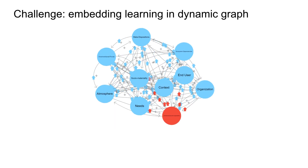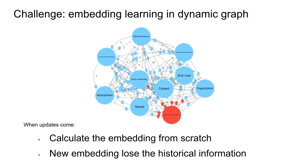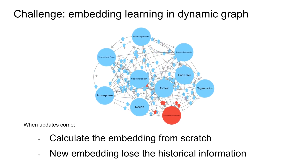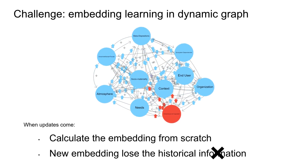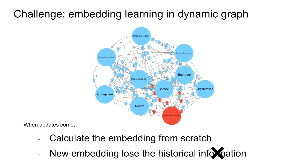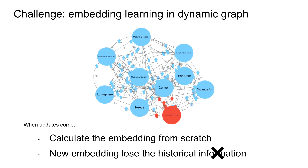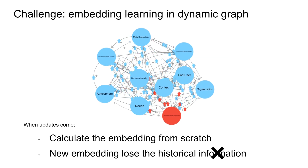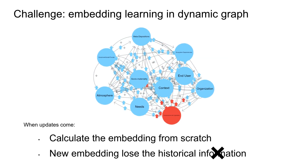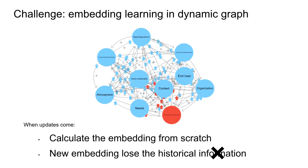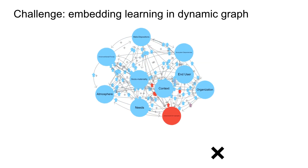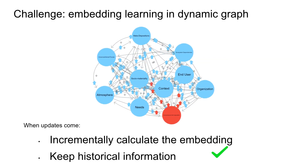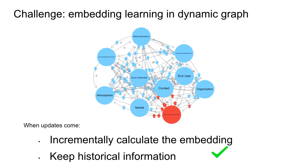However, the graphs in our life are evolving at any time. Calculating the embedding from scratch is time consuming and will lose the historical information. Therefore, we need to think about how to solve these problems.